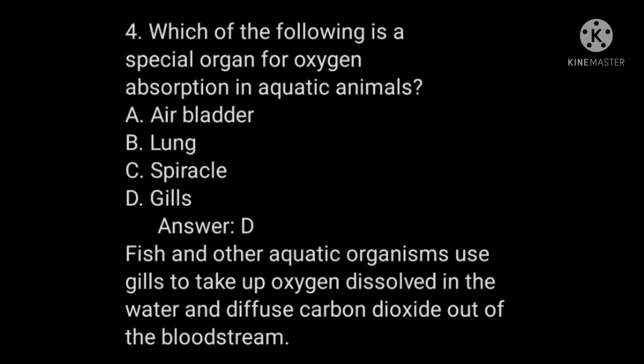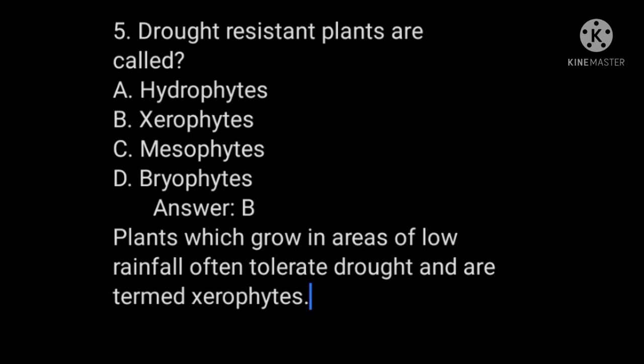Drought-resistant plants are called: A) Hydrophytes, B) Xerophytes, C) Mesophytes, D) Bryophytes. The answer is B, xerophytes, because plants which grow in areas of low rainfall often tolerate droughts and are termed xerophytes. So xerophyte is the correct answer.